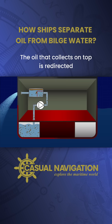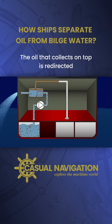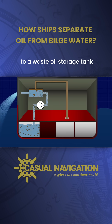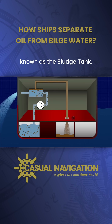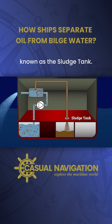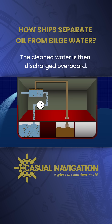The oil that collects on top is redirected to a waste oil storage tank, known as the sludge tank. The cleaned water is then discharged overboard.